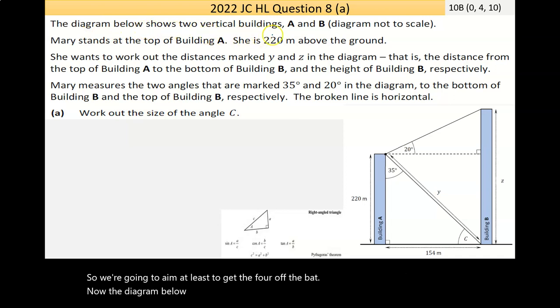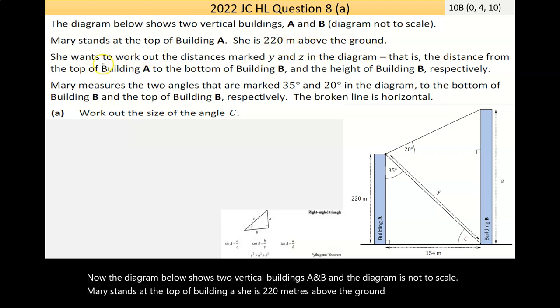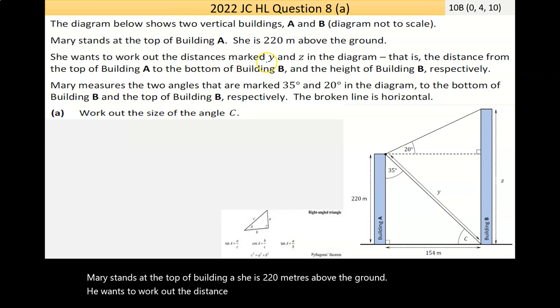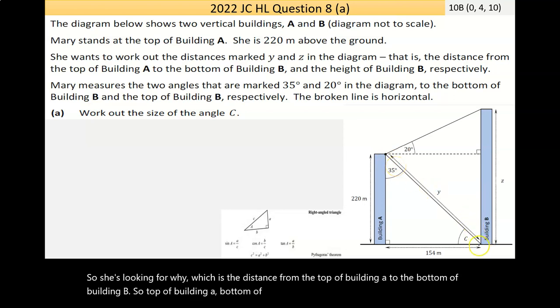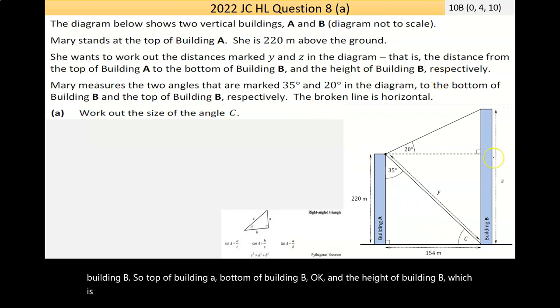Now, the diagram below shows two vertical buildings, A and B, and the diagram is not to scale. Mary stands at the top of building A. She is 220 metres above the ground. She wants to work out the distance marked Y and Z in the diagram. So, this is Y here, this is Z. We're told that this is 220 metres above ground. So, she's looking for Y, which is the distance from the top of building A to the bottom of building B, and the height of building B, which is this larger building here.